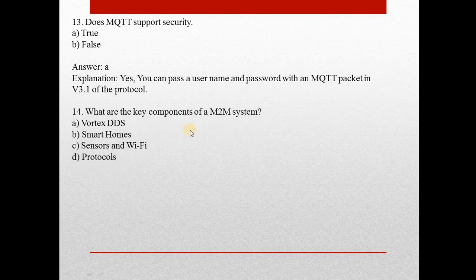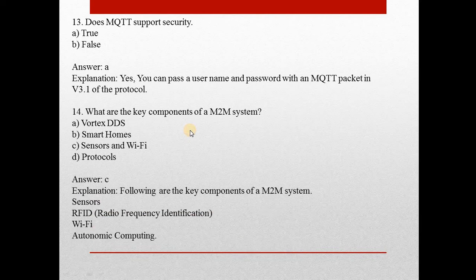Question number fourteen: What are the key components of a M2M system? Answer is C — Sensors and Wi-Fi. The key components of a M2M system are: number one, Sensors; number two, RFID (Radio Frequency Identification); number three, Wi-Fi; and number four, Autonomic computing.